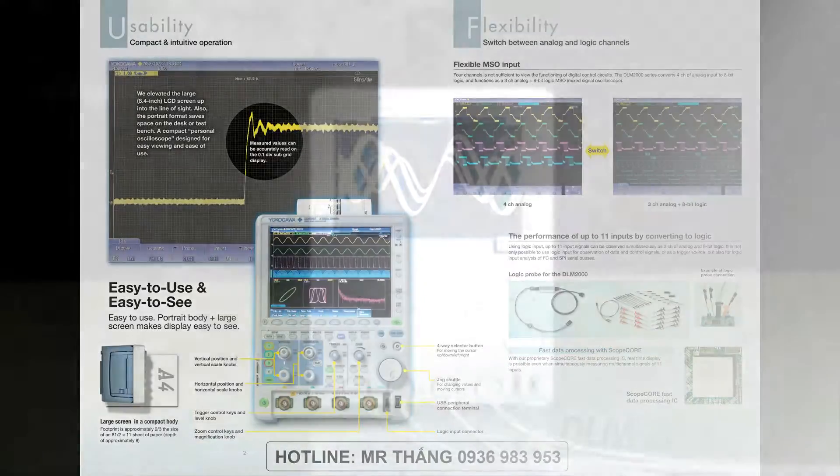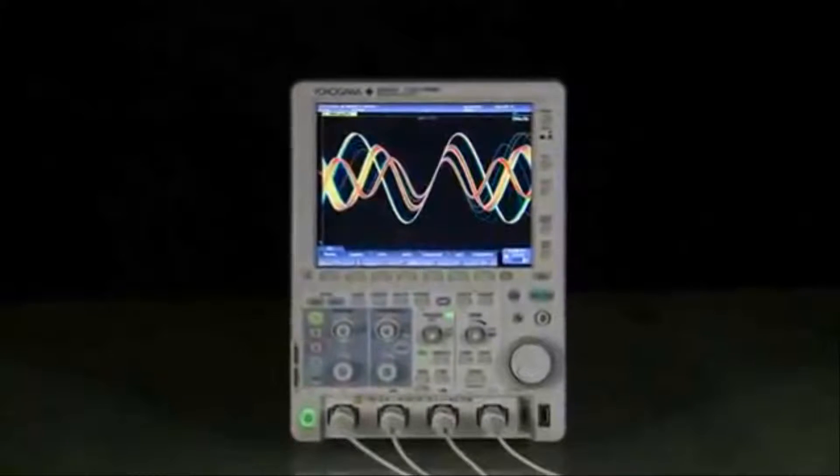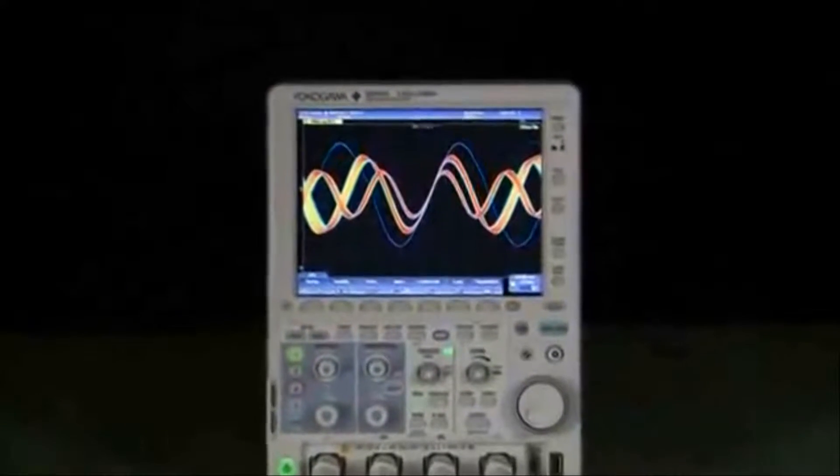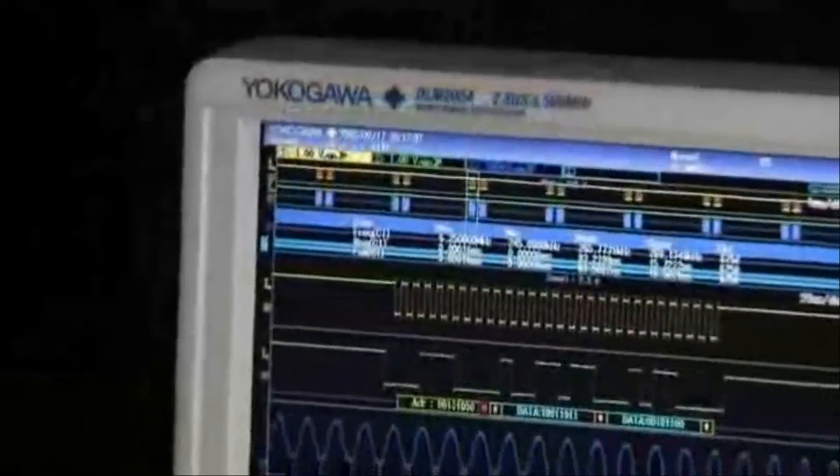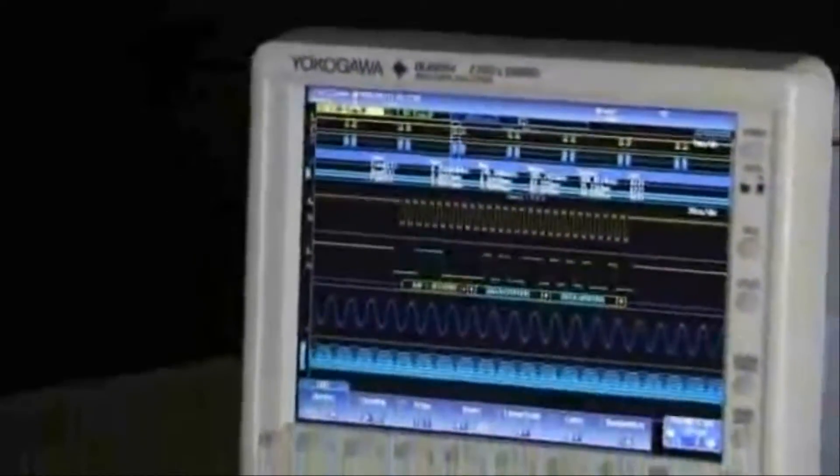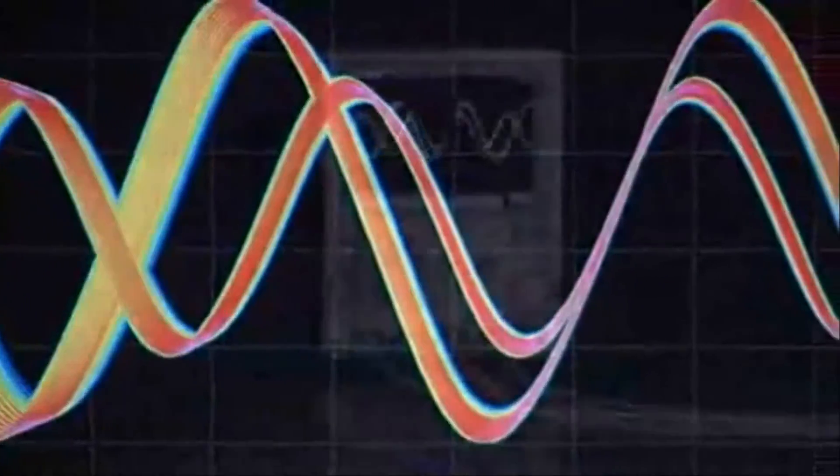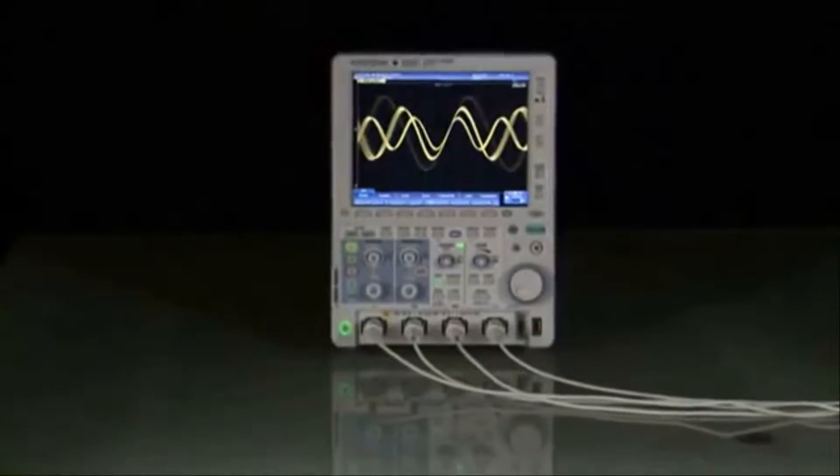Meet the Yokogawa DLM2000, the industry's most capable oscilloscope in the 200 to 500 MHz bandwidth range. It offers best-in-class performance in the areas of acquisition, analysis, and display, all at a price you can digest.